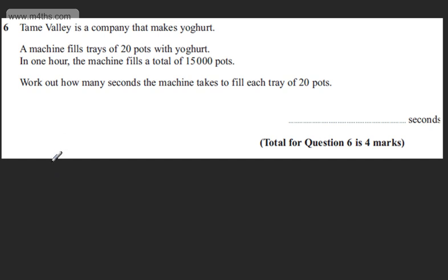As with all of these questions, there's lots of different approaches. What I'm going to look at now is the number of trays. So we're going to have 15,000 and divide this by 20. That's the number of pots divided by how many we can get in each tray.